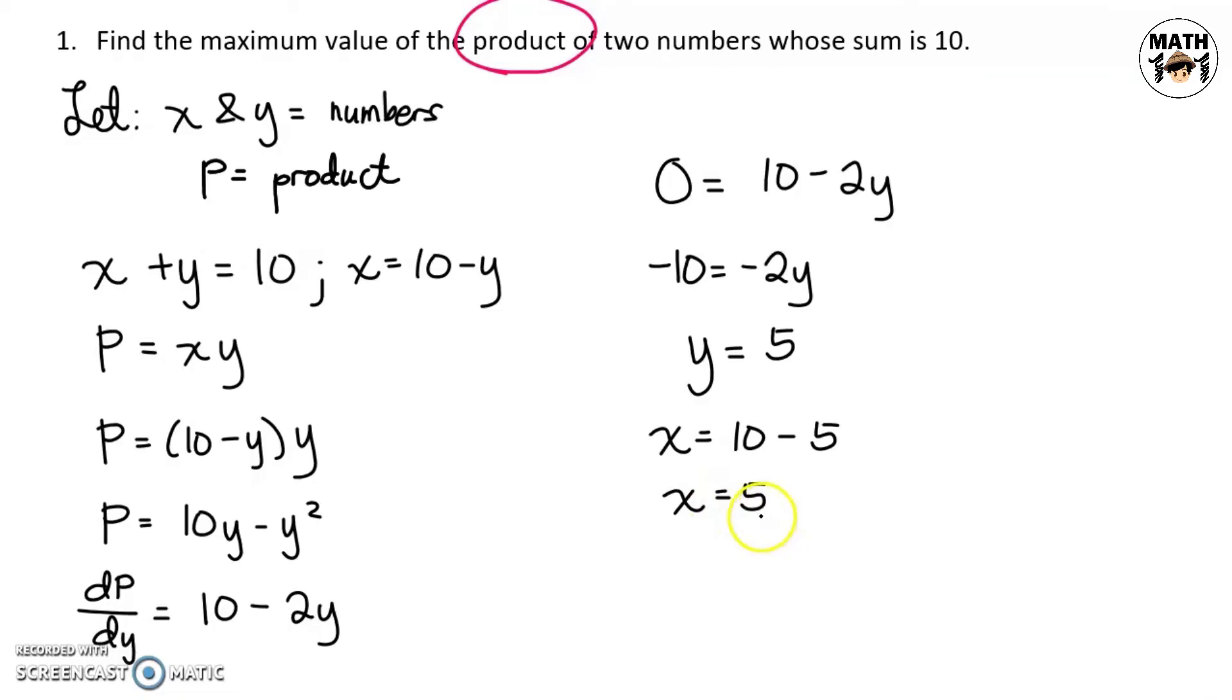Now, the two numbers are 5 and 5. Ang hinahanap natin is the value of their product. So, p equals 5 times 5 or that is equal to 25. Notice na for problems like this, kapag fixed ang sum, yung dalawang numbers is just the half of that sum or dapat lagi silang equal to get the maximum product.